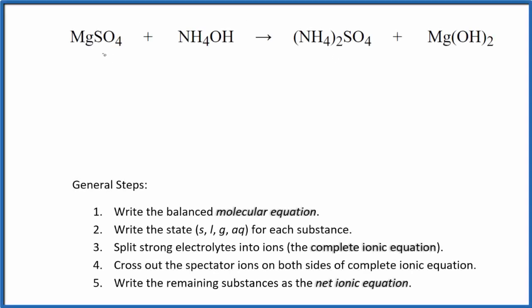Let's write the balanced net ionic equation for MgSO4 plus NH4OH. We have magnesium sulfate and ammonium hydroxide. The ammonium hydroxide is often written as NH3 plus H2O. That would give us the ammonium hydroxide. But here in this equation, let's work with ammonium hydroxide as NH4OH.